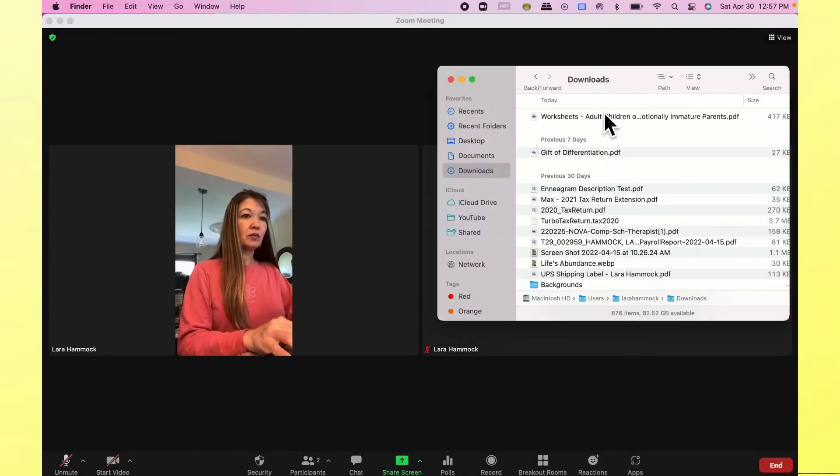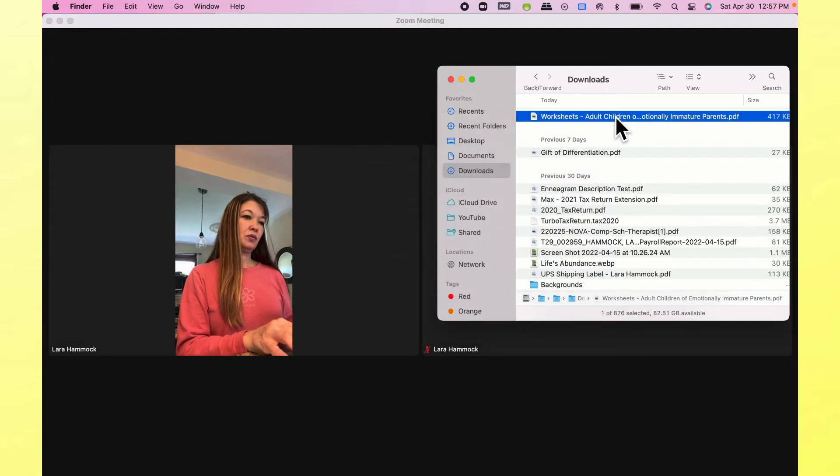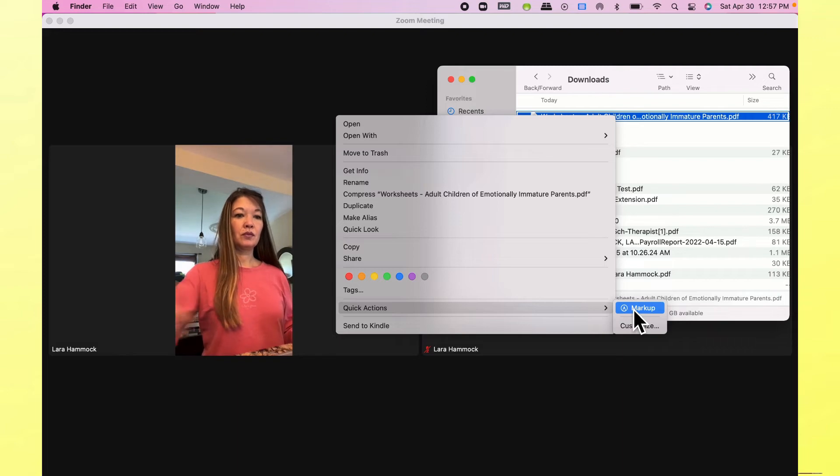The way I do this requires using a Mac along with your iPad. You have to do it in this exact sequence or it doesn't work for whatever reason. On my Mac, I find the PDF in the Finder. You can't click to open the PDF or this will not work. So find the PDF in the Finder. Now two-finger click on it and choose quick actions and then markup.